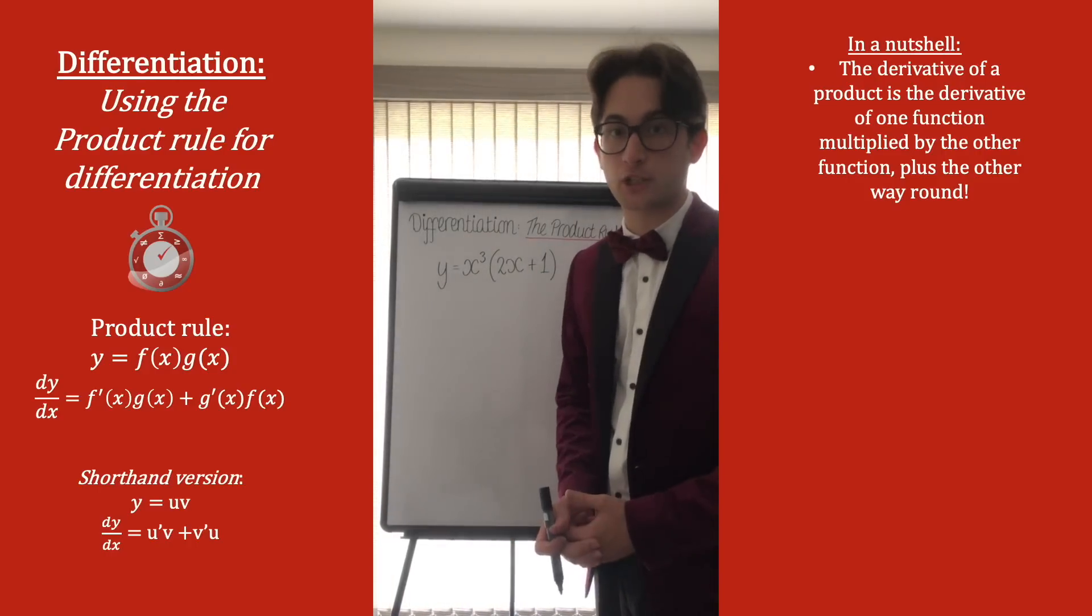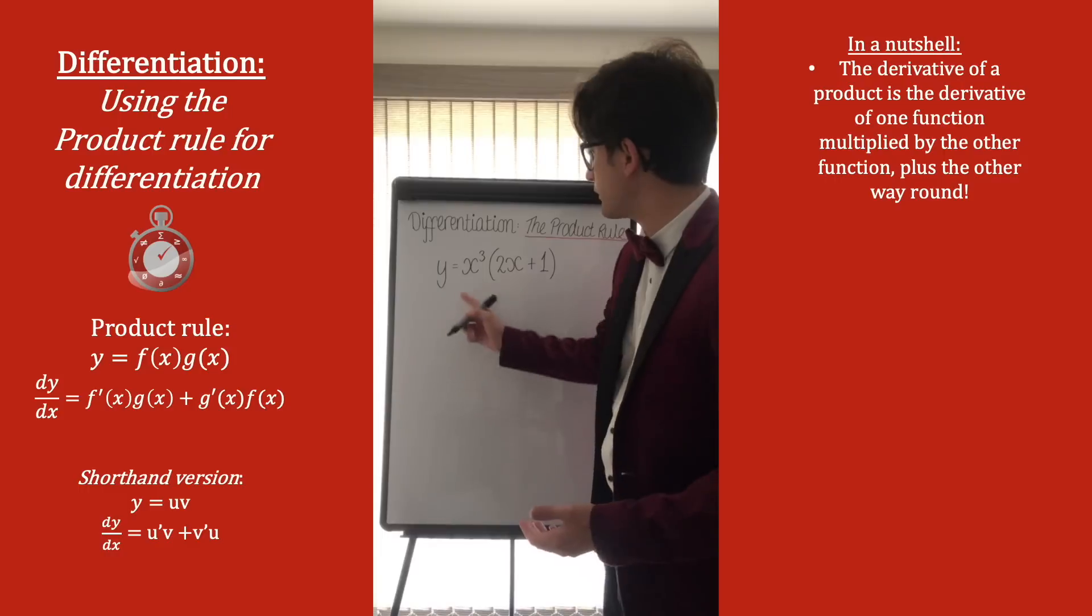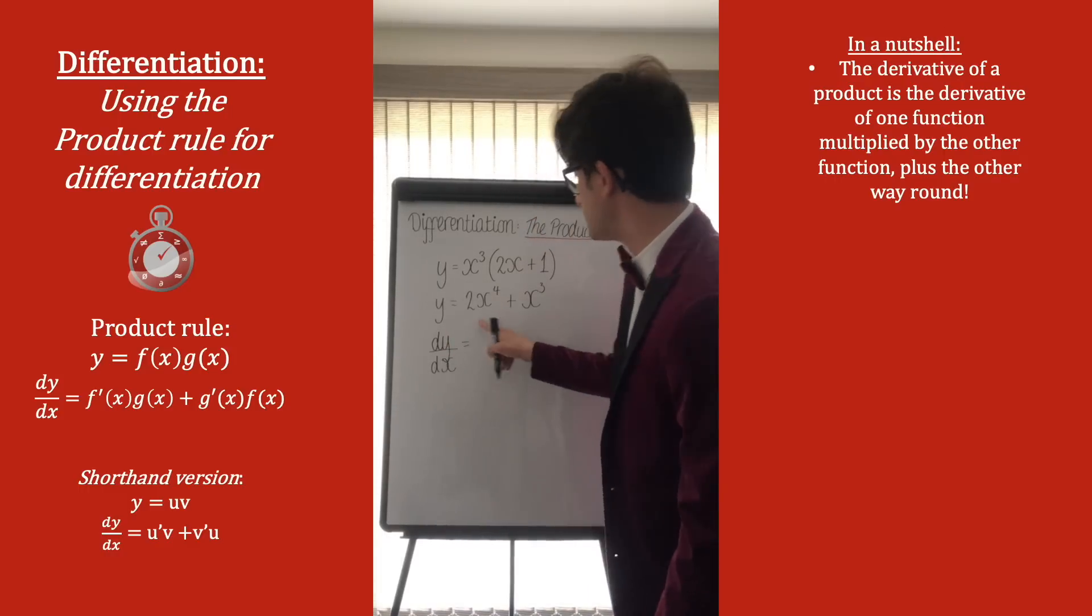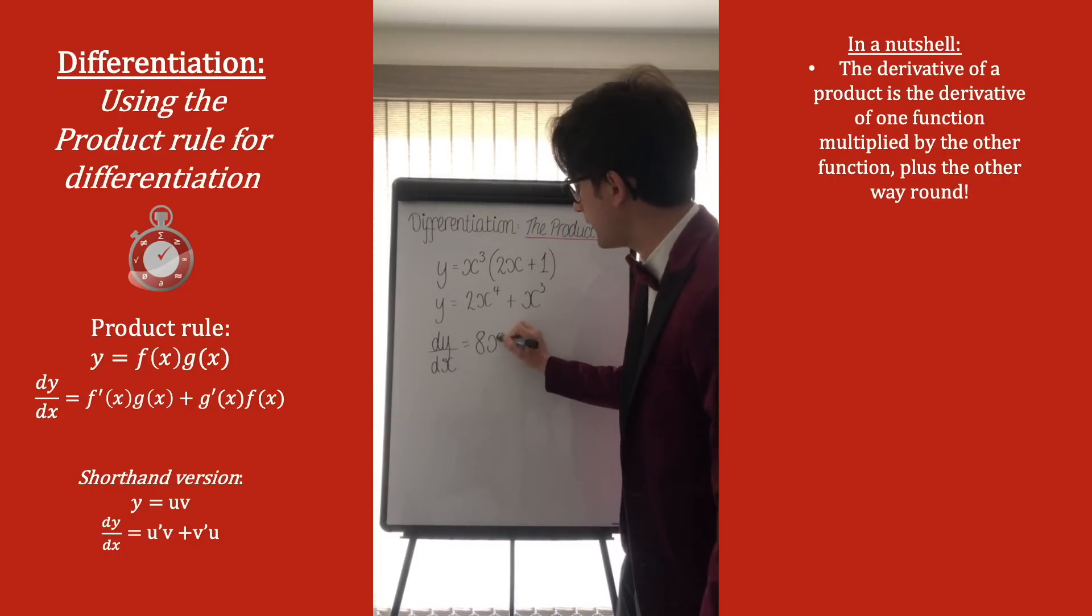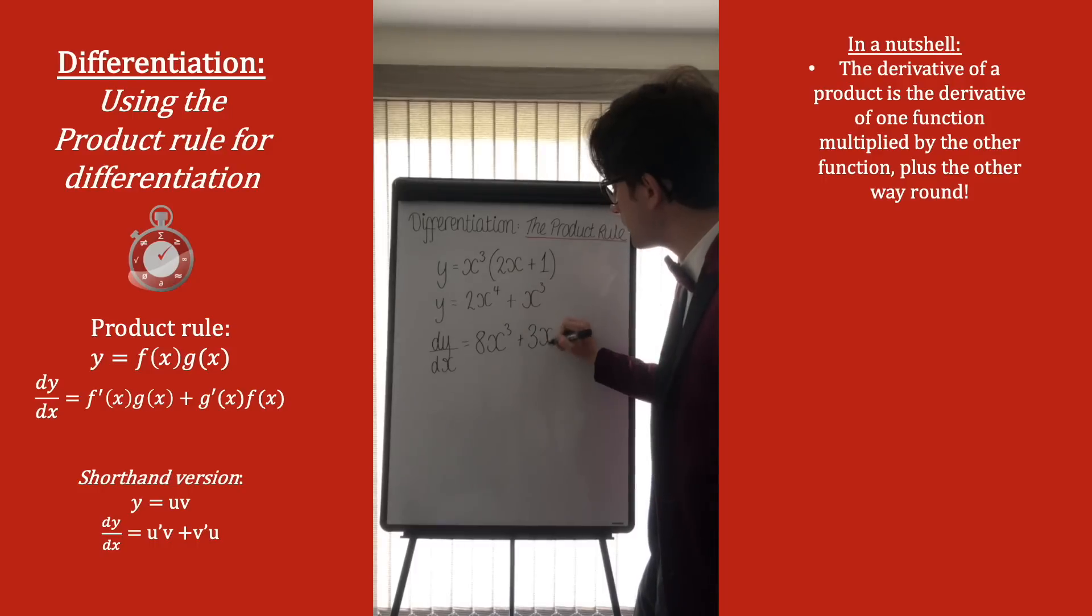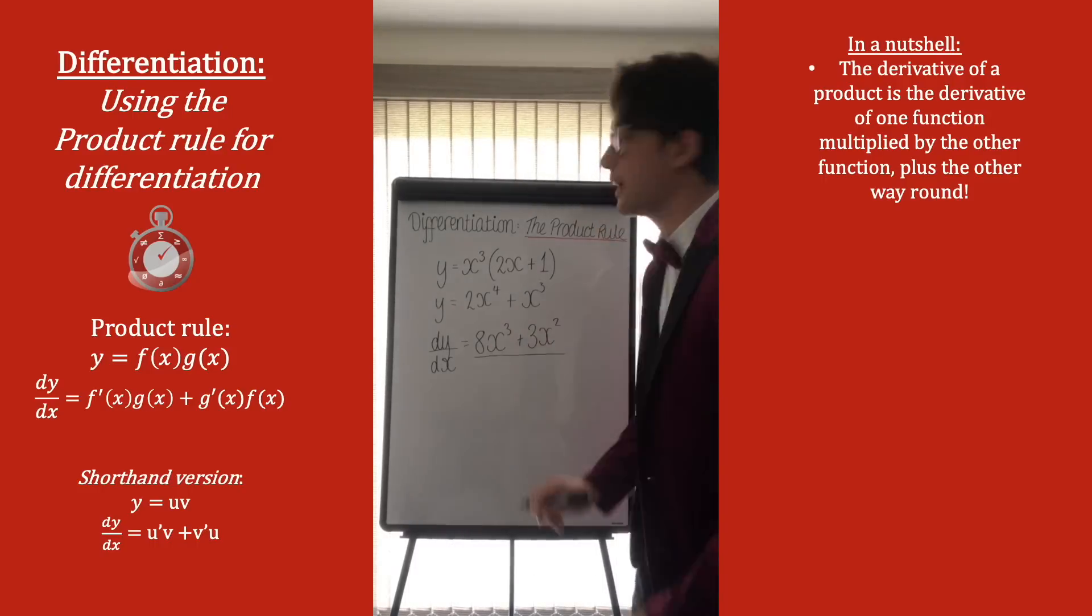And just to prove that this hasn't changed at all from the differentiation we know and understand, let's have a look at the derivative of this if we were to expand it first. Derivative of this, we times the 2 by the 4, is 8, drop the power by 1, x cubed, and then times by the 3, drop the power by 1, 8x cubed plus 3x squared, we get the exact same thing.